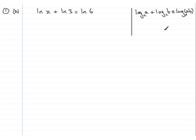So I'm going to use that rule here. We're dealing with natural logs so the base is e. What I get is that combining these two together gives the natural log of x times 3, or better still 3x, and this equals the natural log of 6.